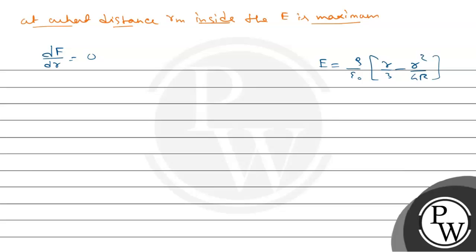We have to find this distance when the electric field is maximum. Maximum is when dE/dr is 0. So now d/dr of ρ₀/ε₀(r/3 - r²/4r) equals 0.